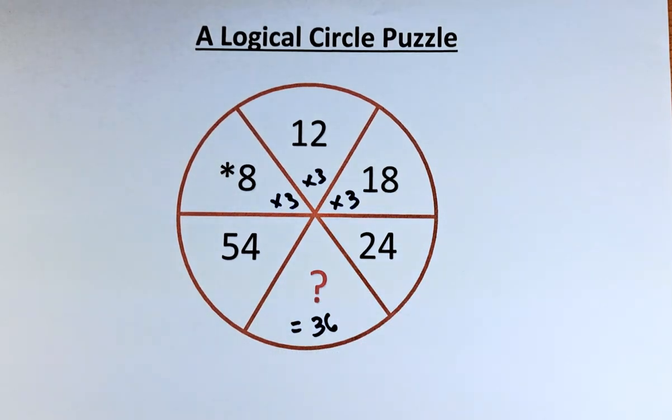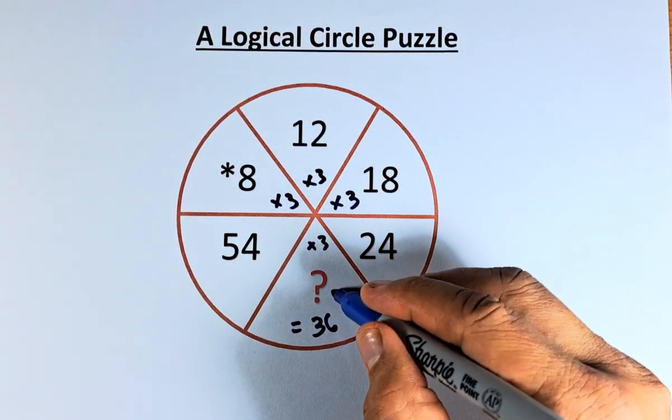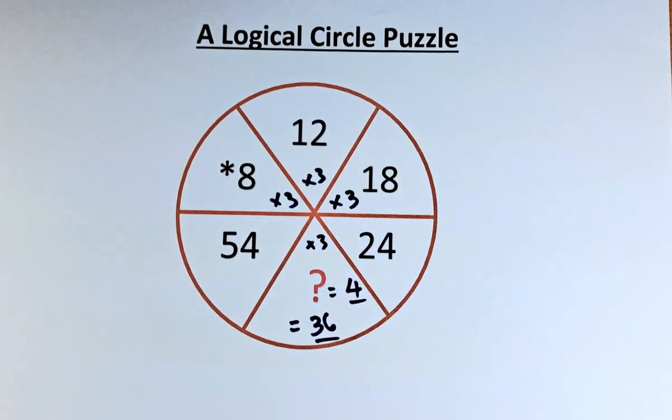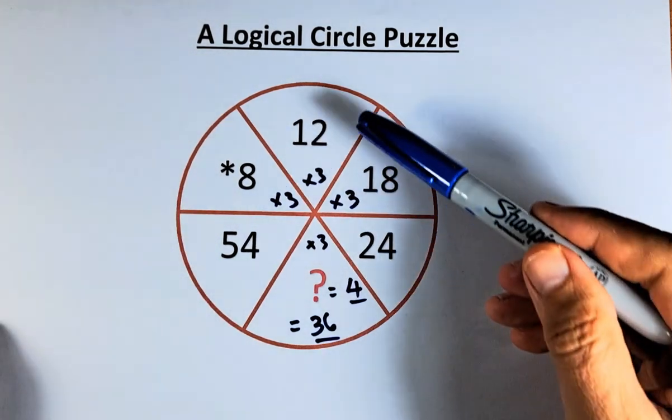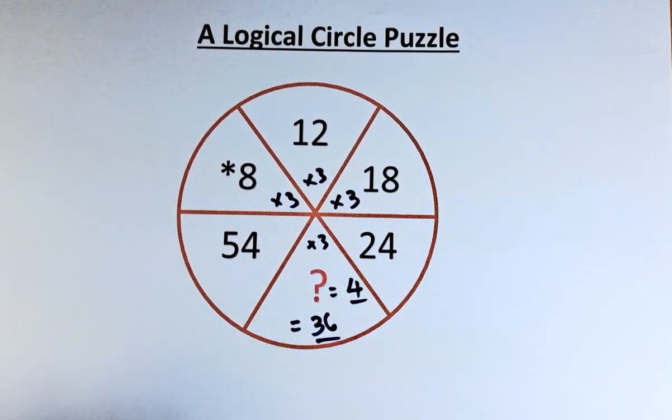Just a word of caution, you can also multiply by 3 here to get 12. So some of you will get the answer as 4, but my answer will always be 36, because we are going around the circle. It's going to start at 8, 12, 18, 24, 36, and 54. So technically, 4 is acceptable, but for me, the answer is 36, it's more suited for this puzzle.